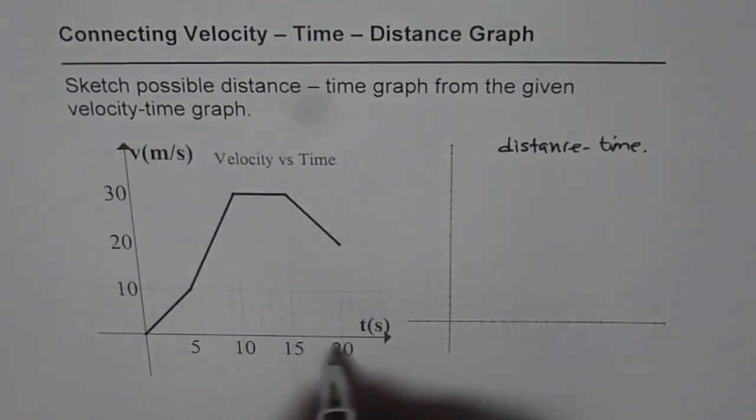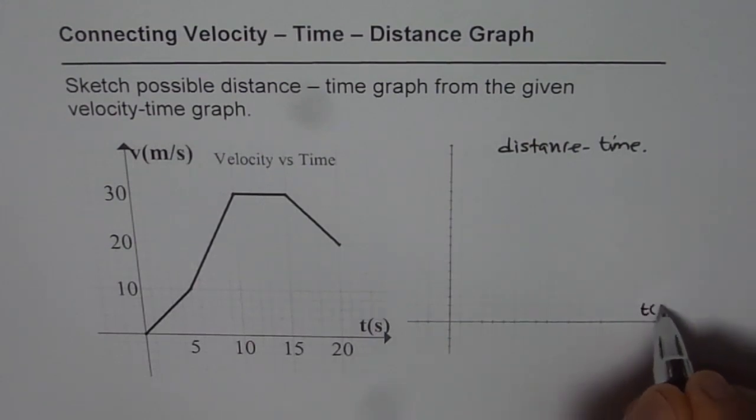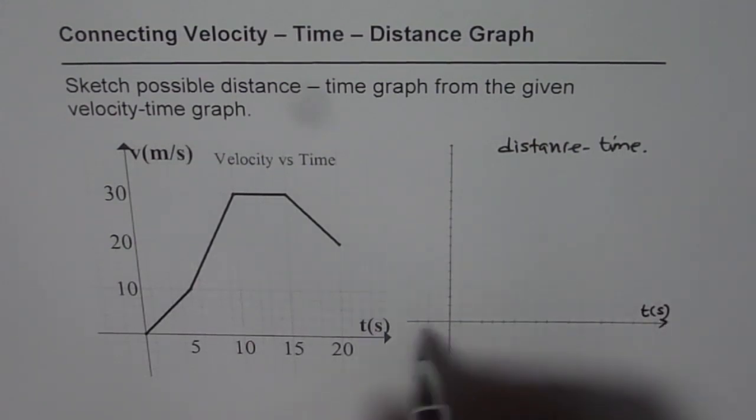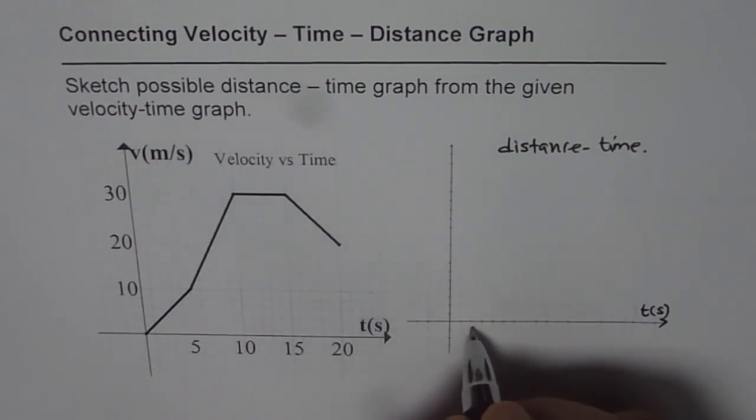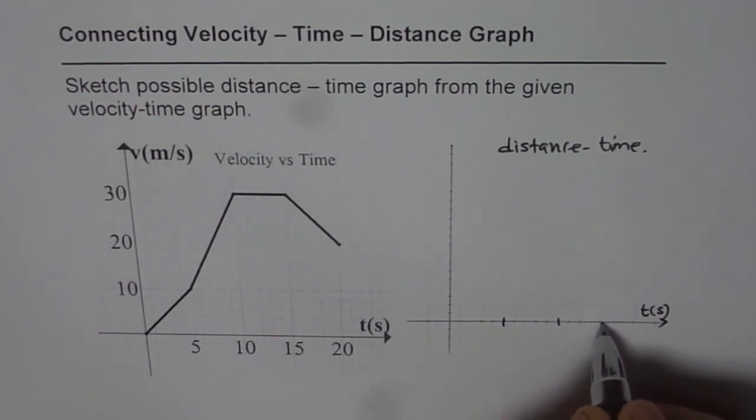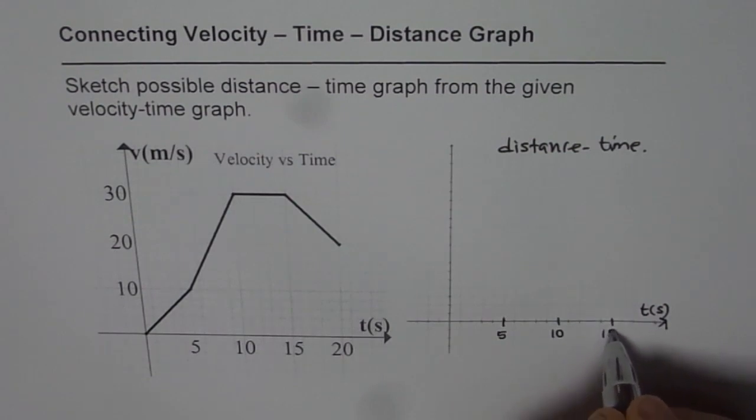Now we will keep the same scale for the time which is given in seconds, so time in seconds. We'll mark every unit: 5, 10, 15, 20. So we have time in seconds, the independent variable, along the x-axis.